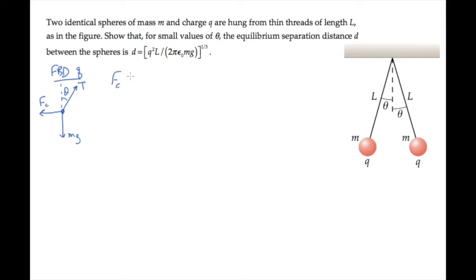That force has magnitude 1 over 4 pi epsilon naught, the product of the charges, divided by the square of the distance separating the two charges. That's the distance d shown here.